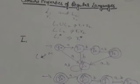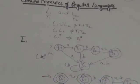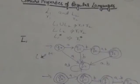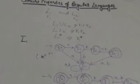L1 concatenation L2 will also be a regular language, and the regular expression corresponding to that language will be R1R2. R1 Kleene closure will also be a regular language, and the regular expression corresponding to this language will be R1*. Now, if L1 is a regular language, then L1 complement will also be a regular language.